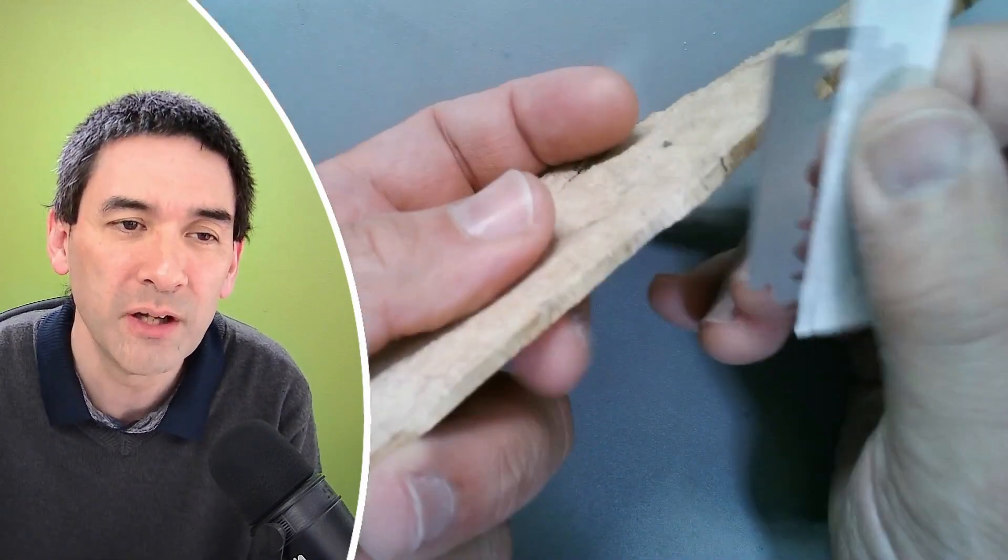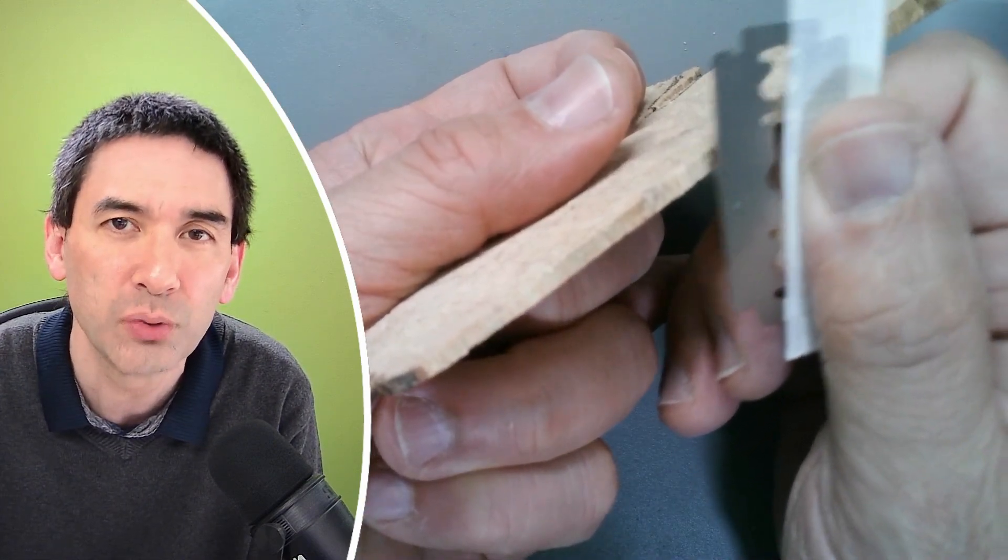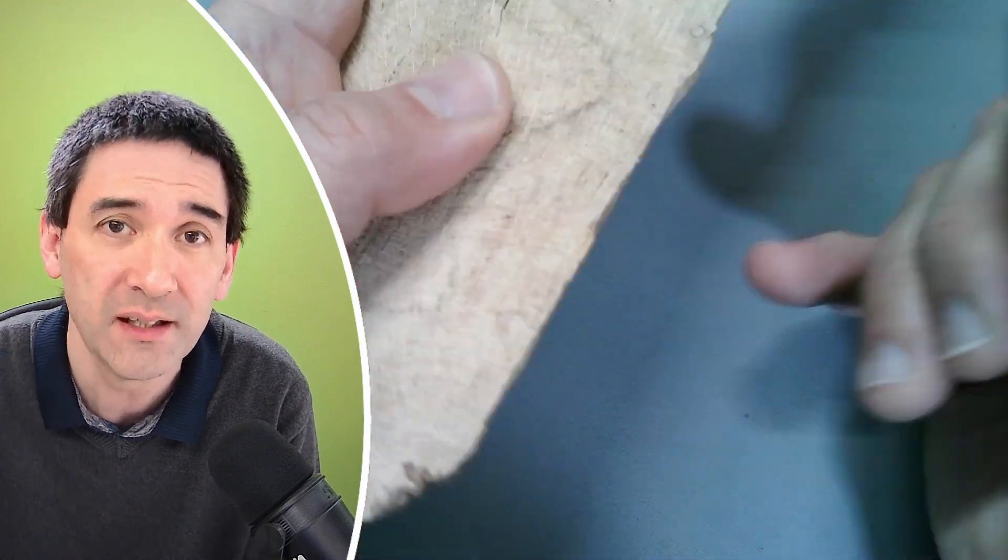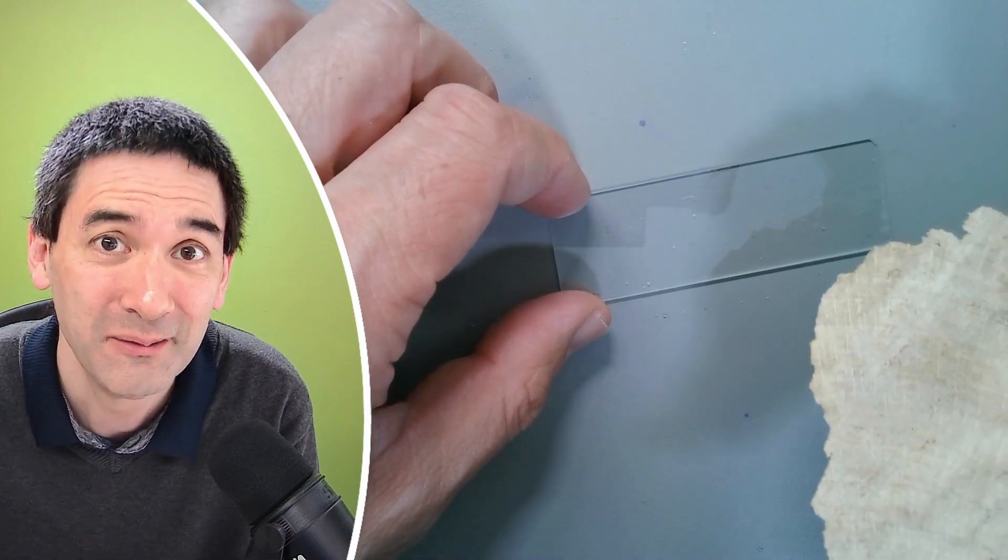I would like to shave off very thin cross sections of the wood in different orientations, like this and also like this. We're gonna collect it on this microscope slide here and then we're gonna put it under the microscope and maybe we're lucky.